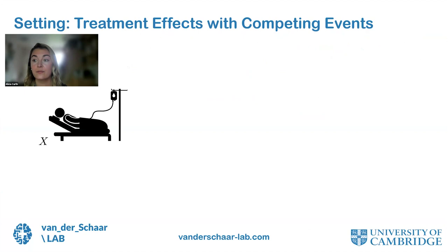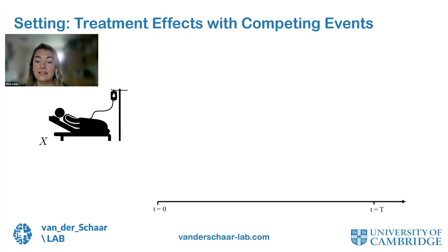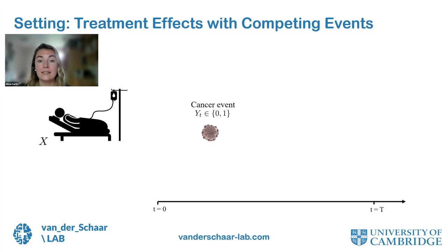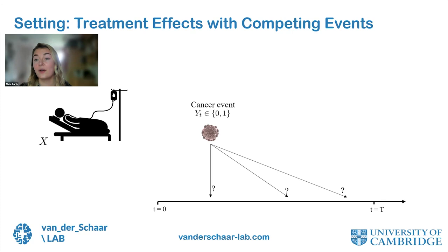We're interested in a setting where we want to make personalized predictions for individuals characterized by some covariates x, in a time to event setting. We have a main event of interest — using the example of a cancer event — where we're interested in whether a cancer related event is going to occur to a patient. Y indicates whether a cancer event such as tumor size exceeding a certain threshold has occurred by a certain time step T.